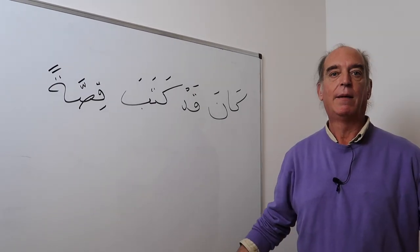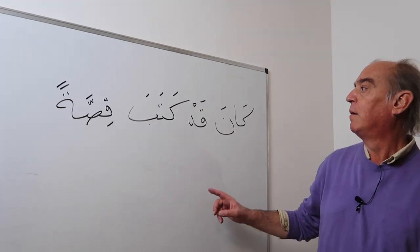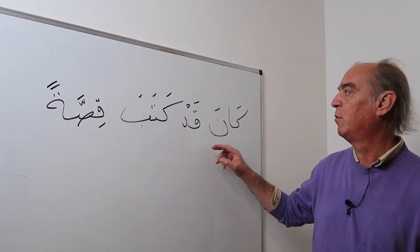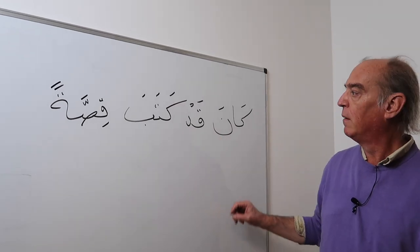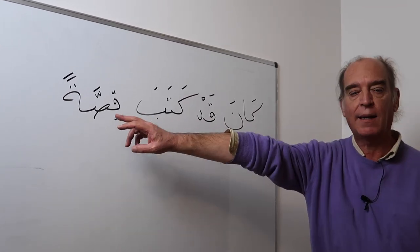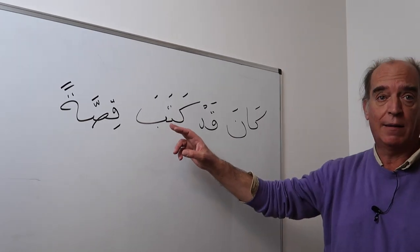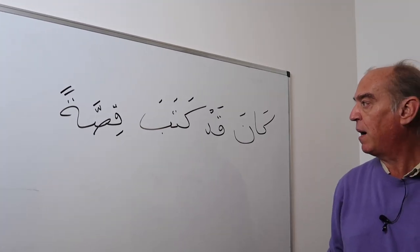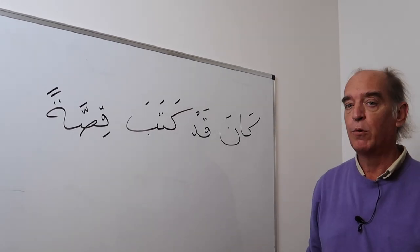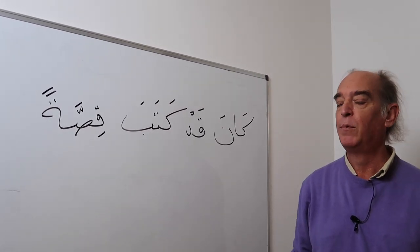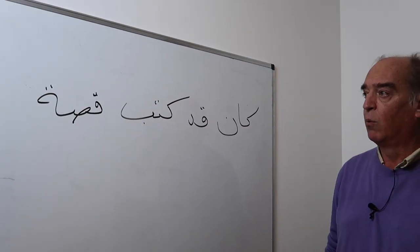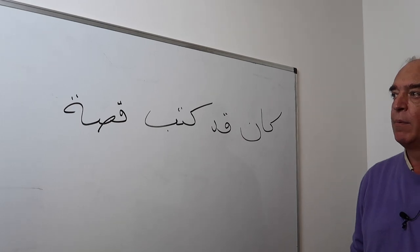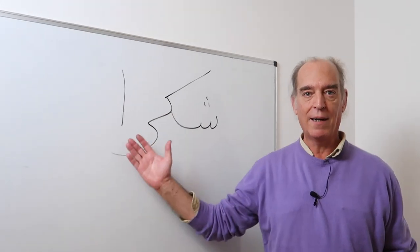Finally, you can use kana with a past verb. But in most cases you have to insert qad. This gives us the past perfect — for example: he had written a story. Shukran — thank you.